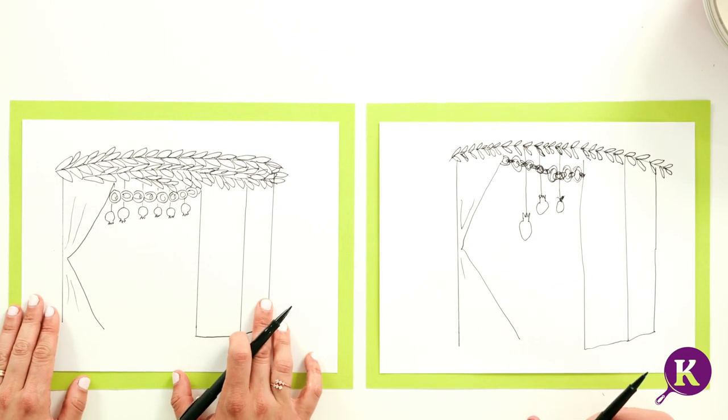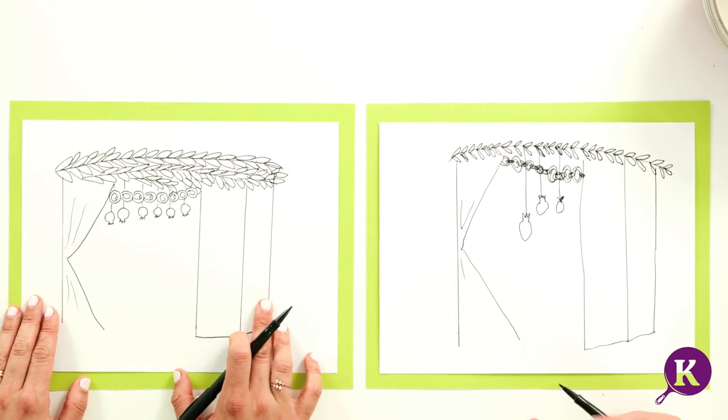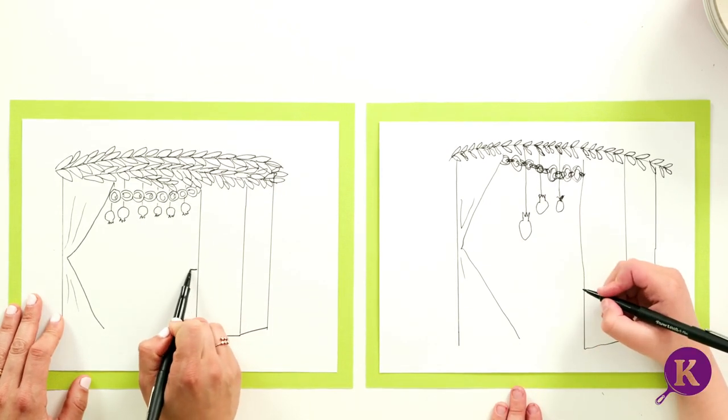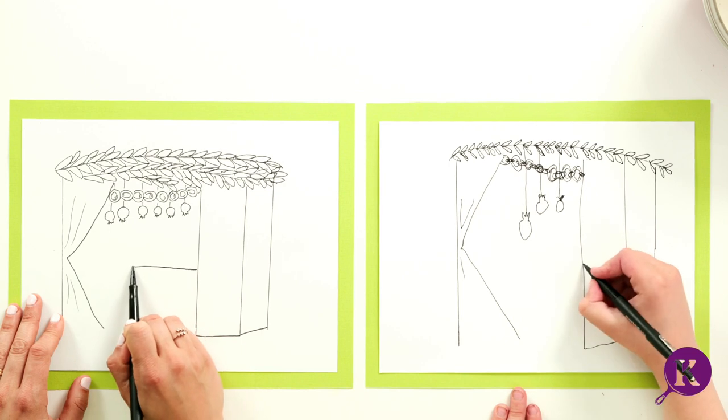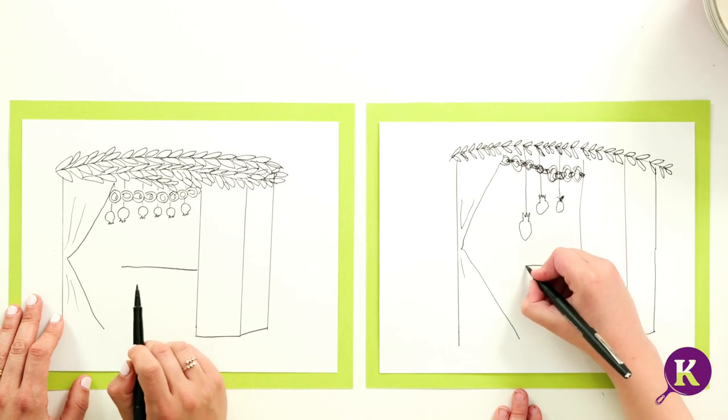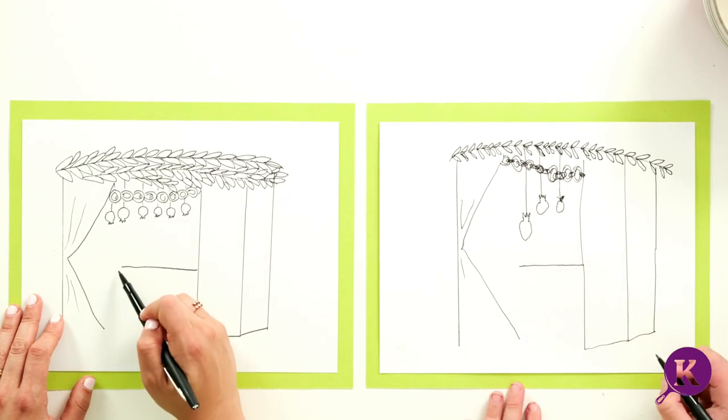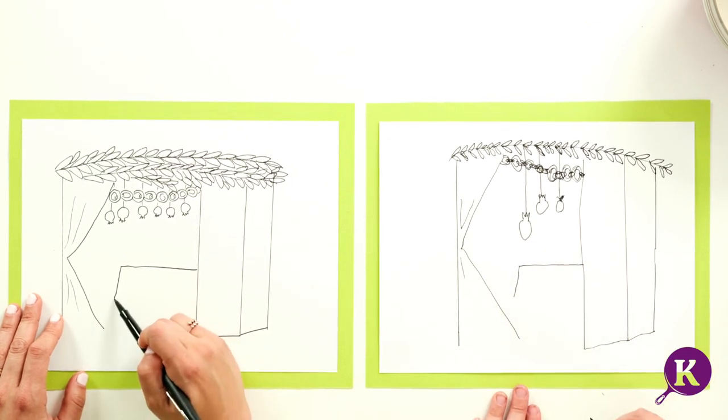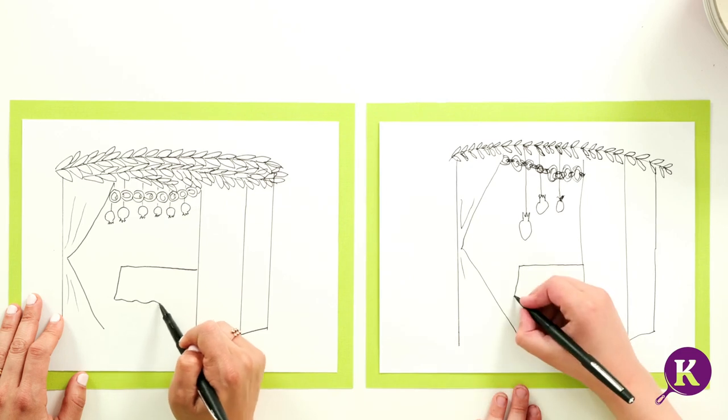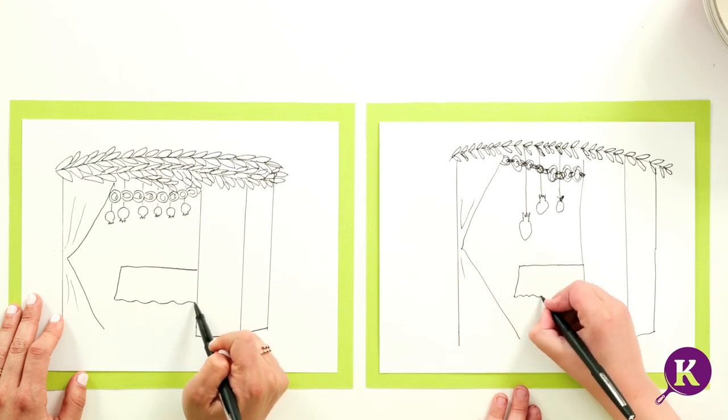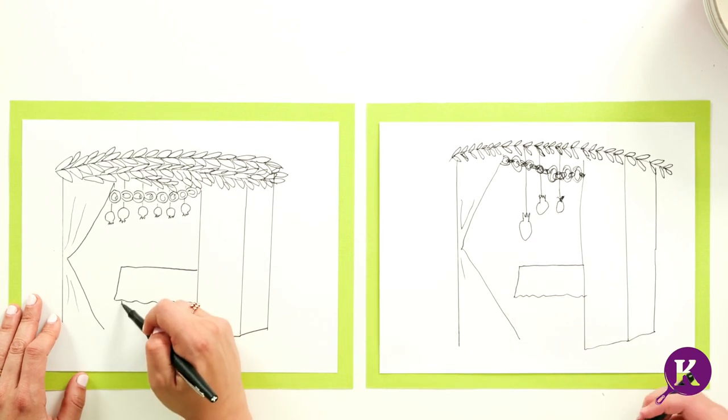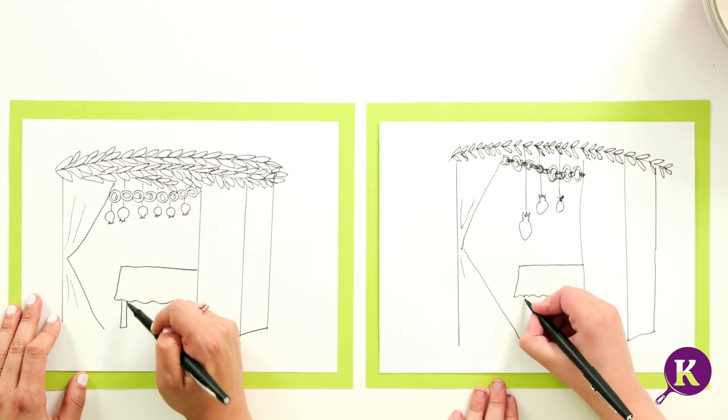Now, because we eat in the Sukkah, we're going to draw a table. So for the table, we're going to have a line coming horizontally across. We're going to have a line coming slanted down. And because it's going to be a tablecloth, we're going to do a nice, slight wave. That's really great. We're going to add a little rectangle coming down for the leg of the table.